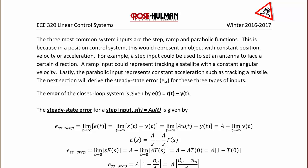Recall that the error for the closed-loop system is the output of that summer, so e(t) = r(t) - y(t).